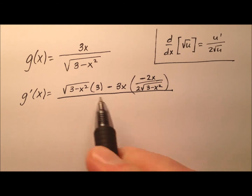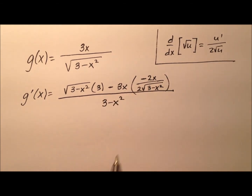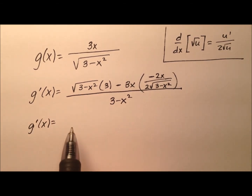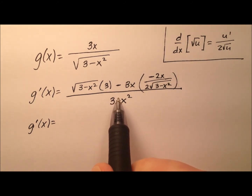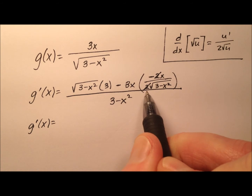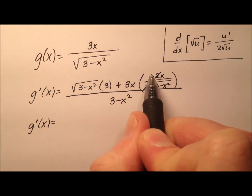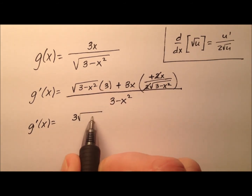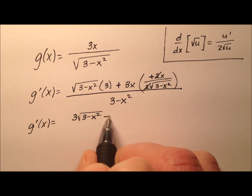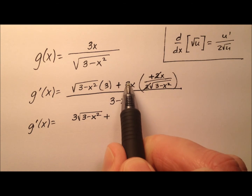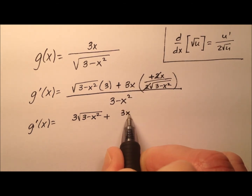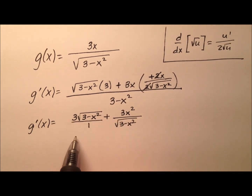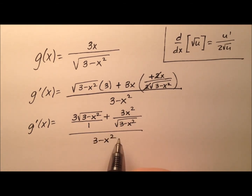When I square this square root, I'm just going to end up with 3 minus x squared. There's lots of good simplification we can do — this will actually come down to a pretty nice expression. The 2 and the 2 here can cancel, and the negative and negative can cancel to make a positive. So this 3 comes out front to make 3 times the square root of 3 minus x squared, plus 3x squared over the square root of 3 minus x squared — put that over a 1 — and all of that is over 3 minus x squared.